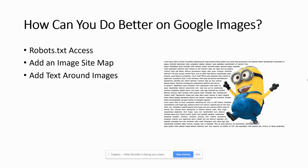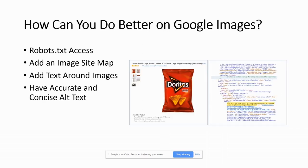The other thing is adding text around your images. This gives context to what the search engine is looking at. They can see your alt text and your title text, but when you add text around that image and help them understand what's going on on that page, the image now has more context. Google can better understand what that image is and why it's there in the first place.